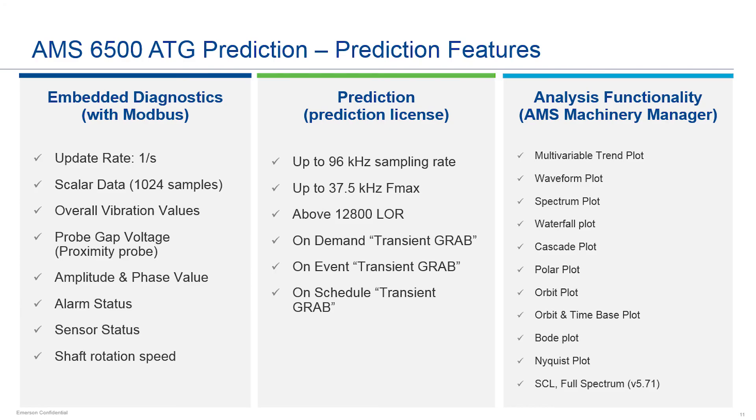With just buying a prediction license for the system, the communication card and AMS6500ATG, these ATG prediction functionalities are easily accessible and upgradeable even to already existing AMS6500ATG protection-only systems.